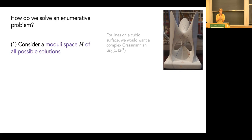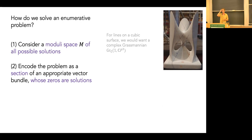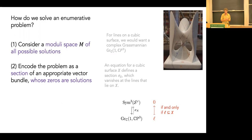To solve such a problem, the first thing we might want to do is consider a moduli space of possible solutions. For lines on a cubic surface, I could take a moduli space of lines passing through CP3, which is some complex Grassmannian. These lines may or may not lie on a cubic, but it's a topological space parametrizing where solutions live. The second part — one of the harder parts — is to encode the problem as a vector bundle over this moduli space, where a specific section's zeros are the solutions.